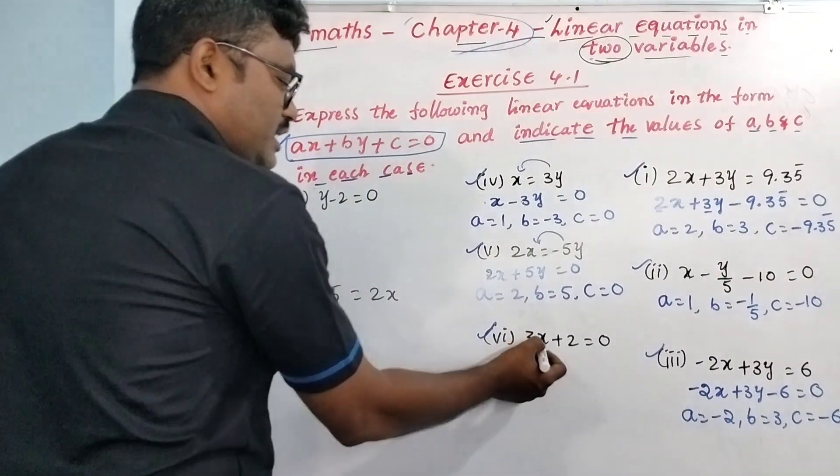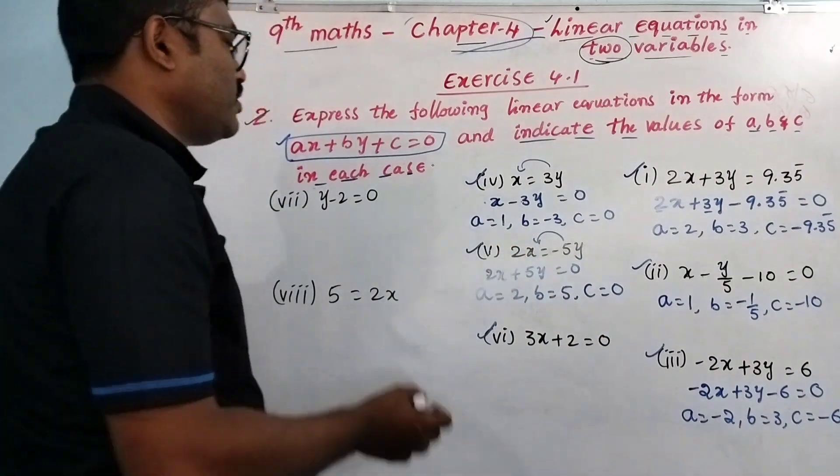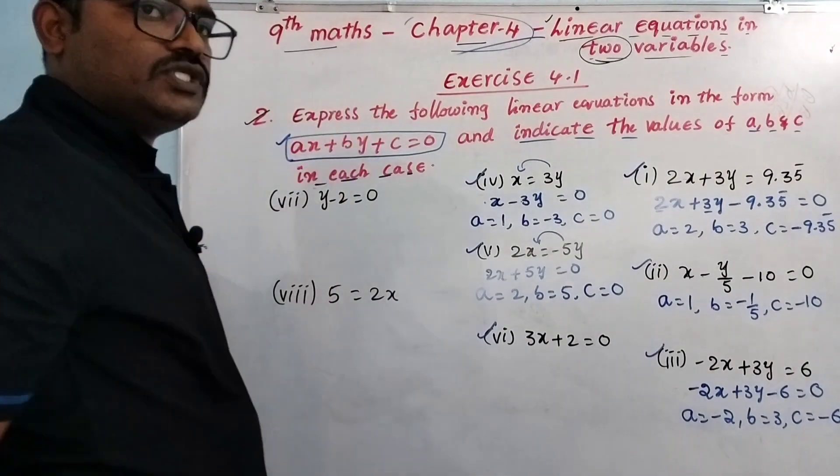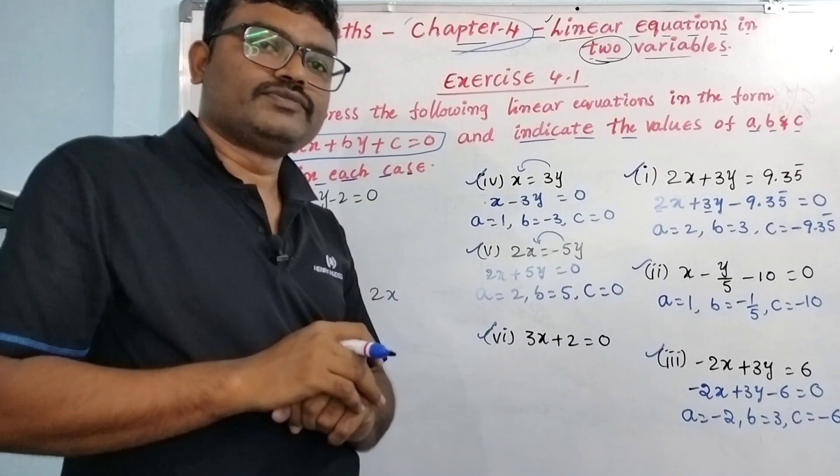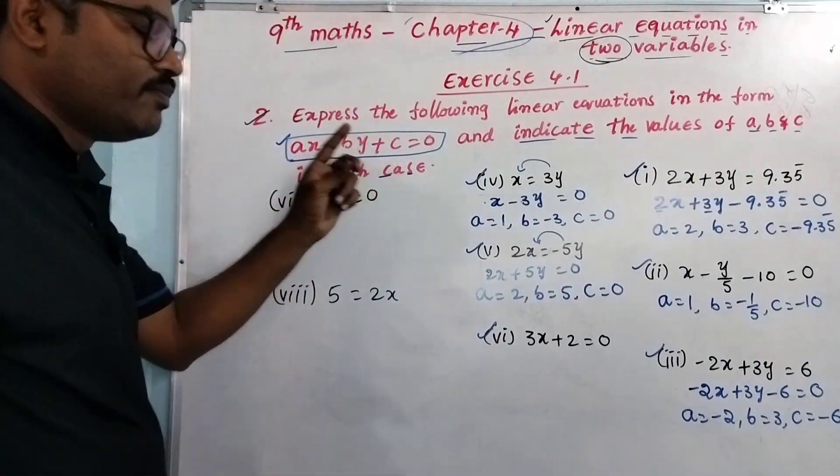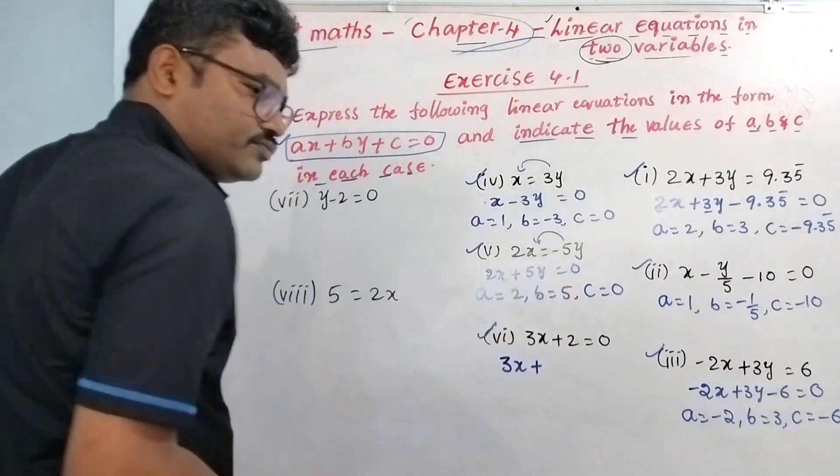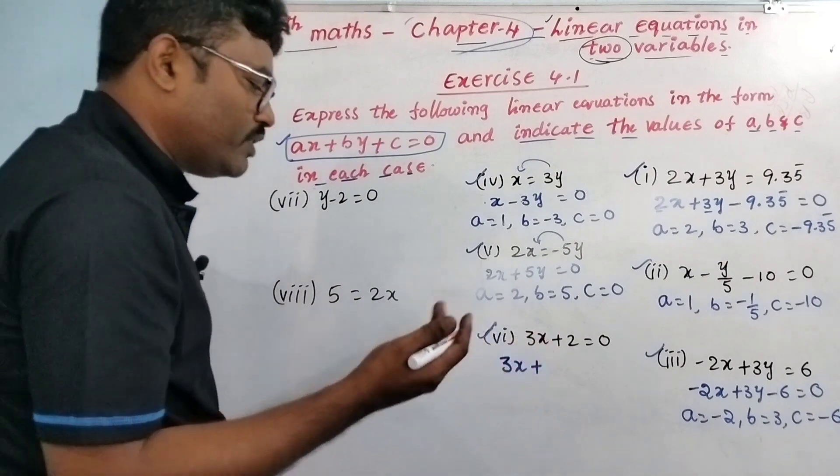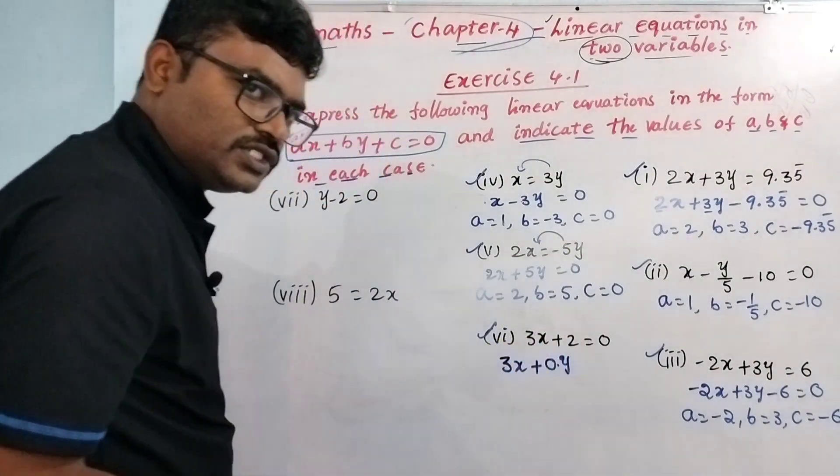Question number 6: 3x + 2 = 0. Already it is in the form ax + by + c = 0. But see here, there is no another term, so one variable only. We can formally express here: 3x plus 0 into y plus 2 equals 0.